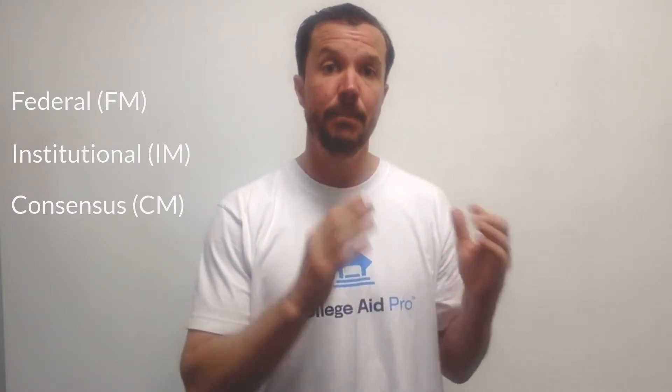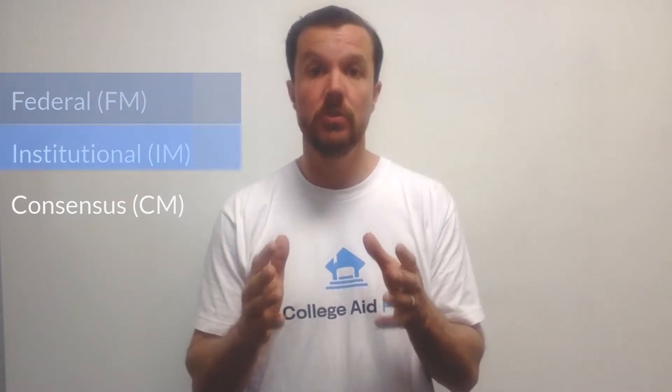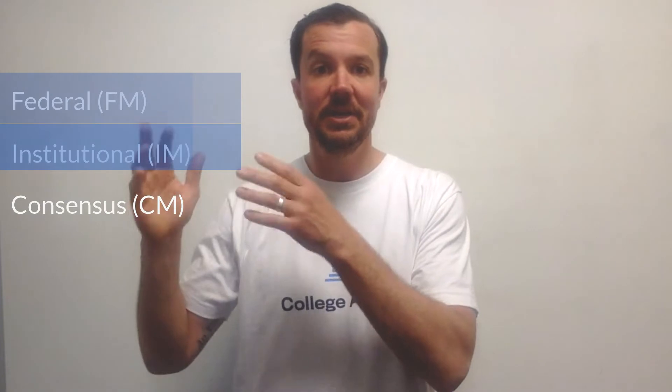Let's talk about EFCs. To further complicate matters in an already complex process, there are three different types of EFCs. Any given college will use one of three: the federal methodology, the institutional methodology, or the consensus methodology. Most public schools use the federal methodology, many private colleges use the institutional methodology, and the elite private colleges — the Ivy League schools, MIT, Stanford — use the consensus methodology.